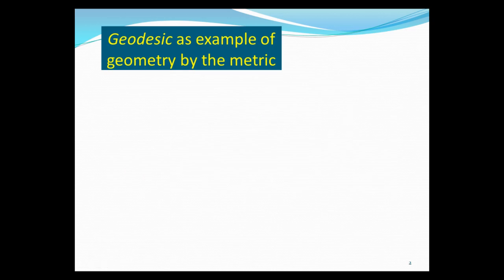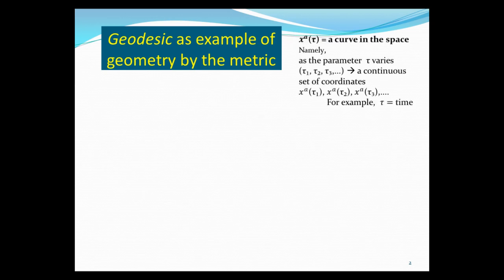We're going to talk about the geodesic as an example of geometry determined by the metric. A geodesic is a curve. For any curve, we can write it as a set of coordinates that depend on a curve parameter tau. The parameter tau varies from tau 1 to tau 3, tracing out a series of coordinates x(tau1) to x(tau3). For example, tau can be the time variable — as time changes, position changes, and that gives you the trajectory.